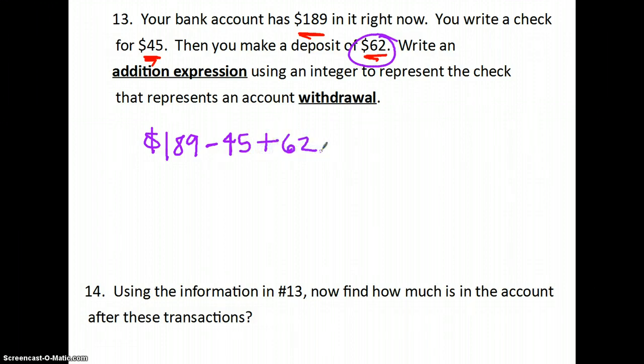So write an integer, addition expression using an integer to represent the check that represents an account withdrawal. So I have $189, I subtract 45, it gives me 144, plus 62 is 206. So using the information in number 13, how much is in the account? That is 206.